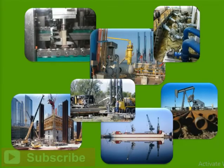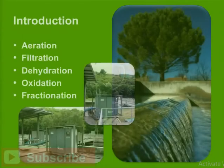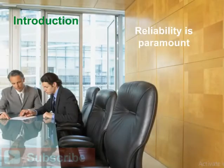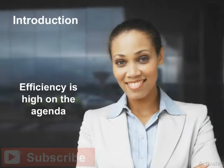It powers pneumatic tools, conveyors, hoists, pumps, and machines. In processes, it is used for aeration, filtration, dehydration, oxidation, and fractionation. Since many facilities cannot function without compressed air, reliability is paramount. But given that sound operating practices can reduce energy consumption by 20–50%, efficiency is high on the agenda.